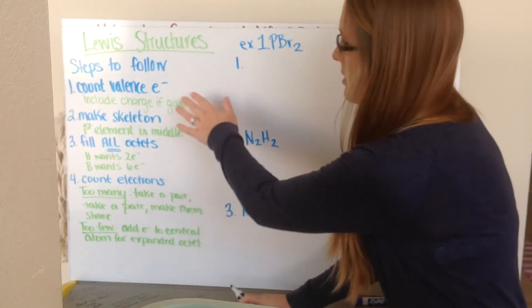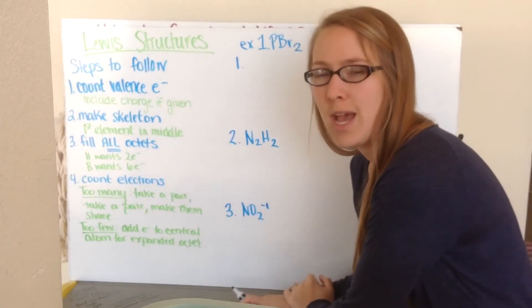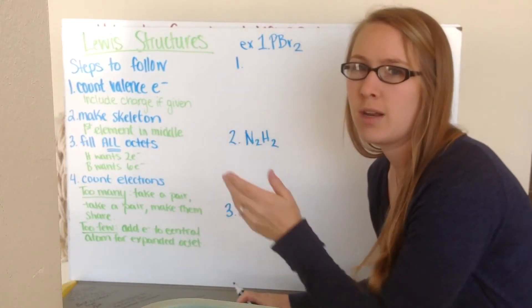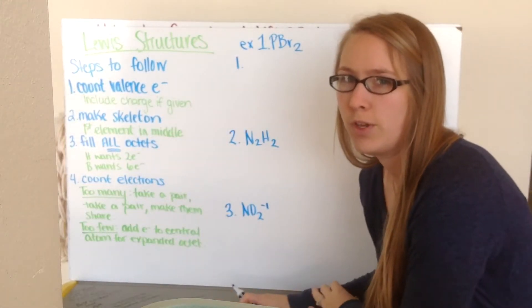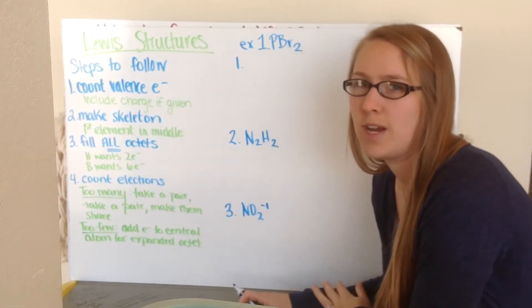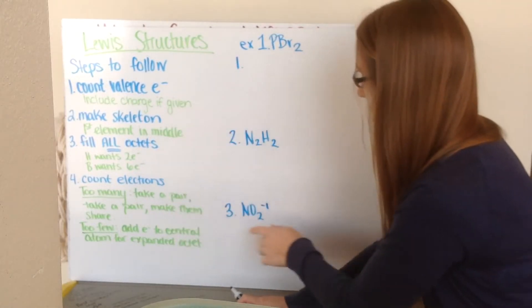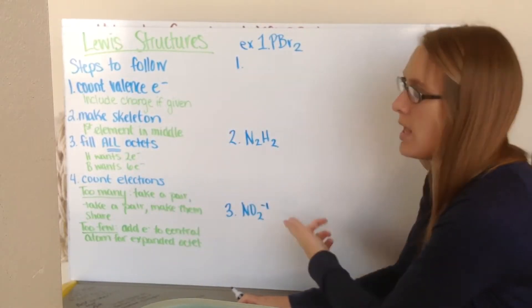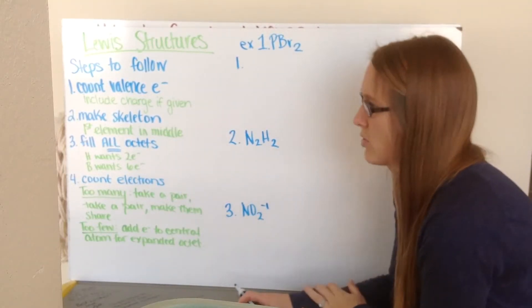So our first step we want to do is count our number of valence electrons. So that's the number of electrons that are in the outermost shell. And if we exclude our transition metals and we number our groups going across, it's equal to the number of the groups. So something's in group 5, it has 5 valence electrons. If there's a charge given on our molecules, like in this example here, if it's a negative charge, it means we have an extra electron. A positive charge means we have one less electron.